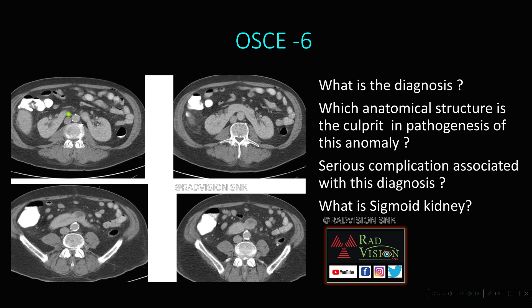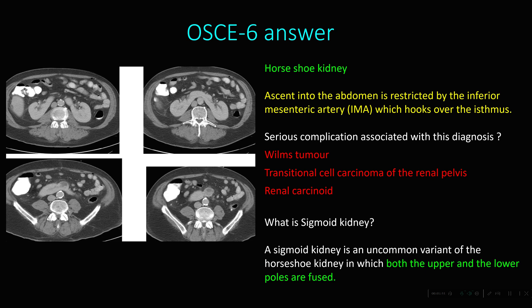Next, OSCE 6. Here you can see the inferior and middle poles of both kidneys are fused — this is a horseshoe kidney. There is also a heterogeneously enhancing mass arising from the pelvis of these fused kidneys, indicating malignancy. The ascent of the horseshoe kidney into the abdomen is restricted by the inferior mesenteric artery, which hooks over the isthmus and stops renal ascent. The serious complications of horseshoe kidney include Wilms' tumor, transitional cell carcinoma of the renal pelvis, and renal carcinoid. This case turned out to be a transitional cell carcinoma of the renal pelvis.